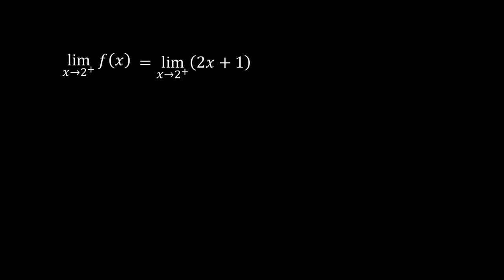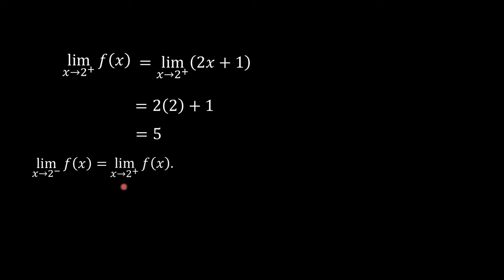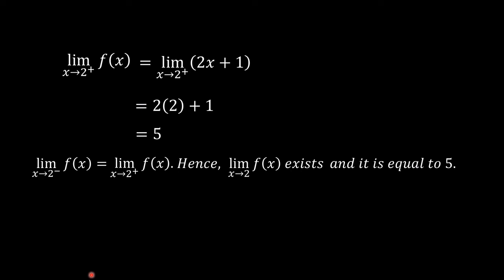The limit of f of x as x approaches 2 from the right equals the limit of (2x + 1) as x approaches 2 from the right. Substituting 2 for x: 2 times 2 plus 1 equals 5. Since the left-hand limit and the right-hand limit are both equal to 5, the limit of f of x as x approaches 2 exists and equals 5.